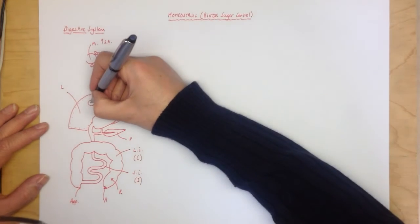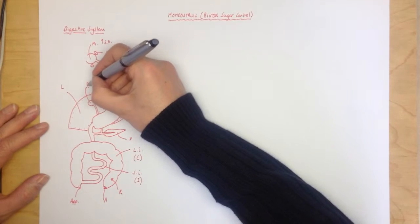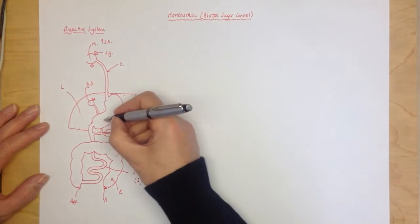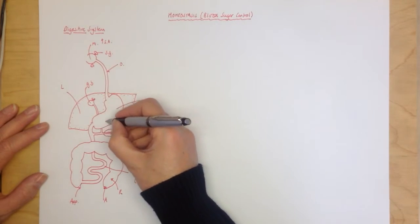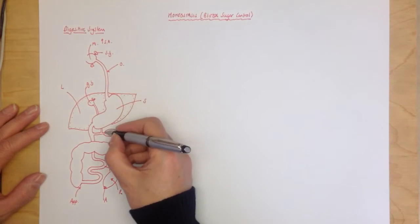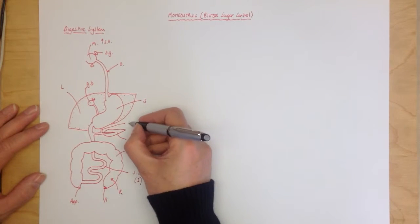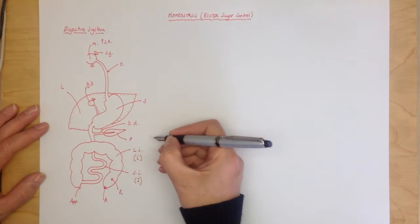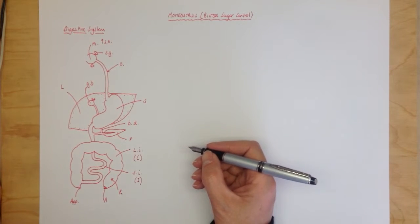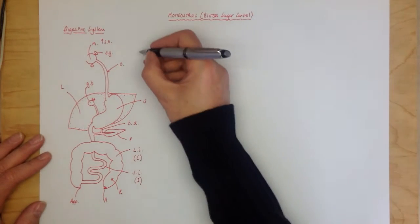Now for the higher paper, you need to know that the structure here is called the gallbladder, and this tube that runs down there, around the back of the stomach to there, is called the bile duct. Those are all the structures that you need to be able to name and identify. Some of the spellings are a little bit complicated.